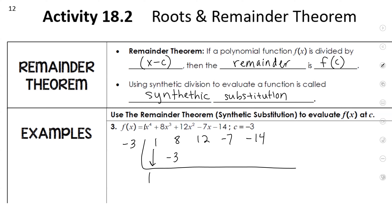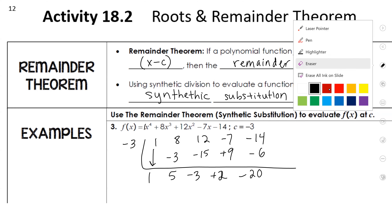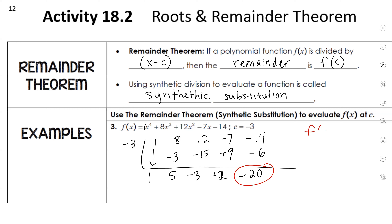Now we do synthetic division: negative 3 times 1 is negative 3. 8 plus negative 3 is 5. This becomes negative 15, then a 3. Negative 9, positive 9, positive 2. Negative 3 times 2 is negative 6, and this is negative 20. Note: they gave us c equals negative 3, not c plus 3. If they gave you a factor, that's when you flip it. This negative 20 is your remainder, so that means if you plug negative 3 into the polynomial, your answer is negative 20. That's what the remainder theorem tells us.